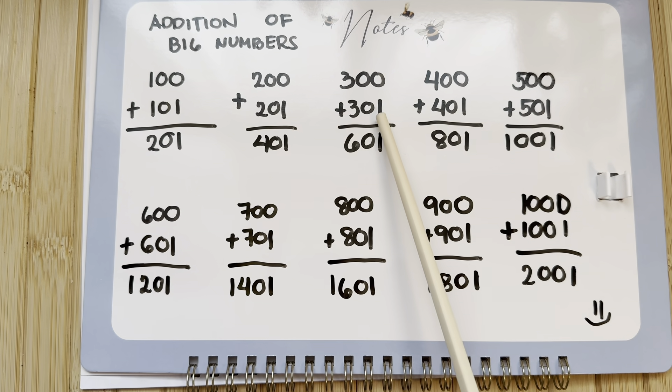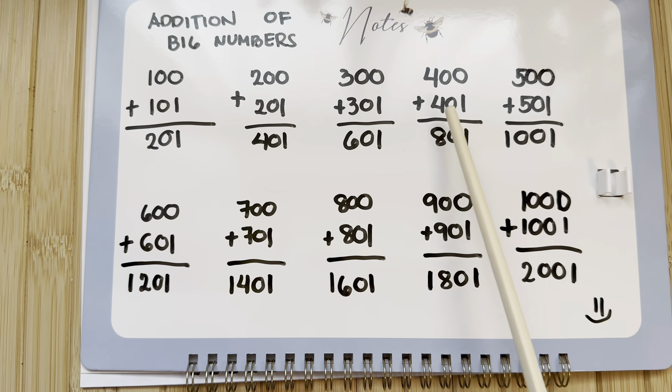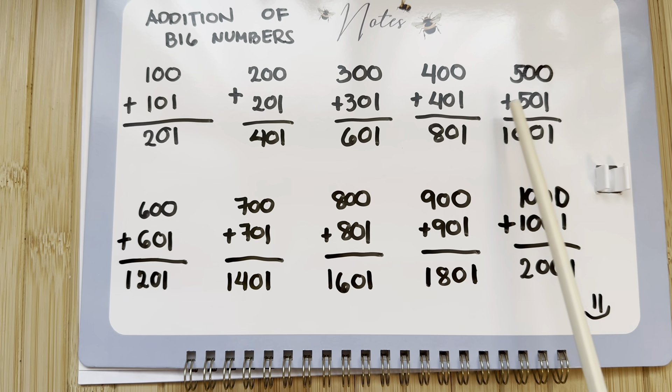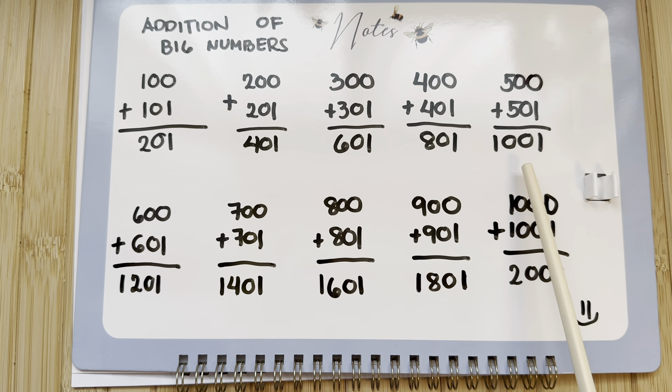300 plus 301 equals 601. 400 plus 401 equals 801. 500 plus 501 equals 1,001.